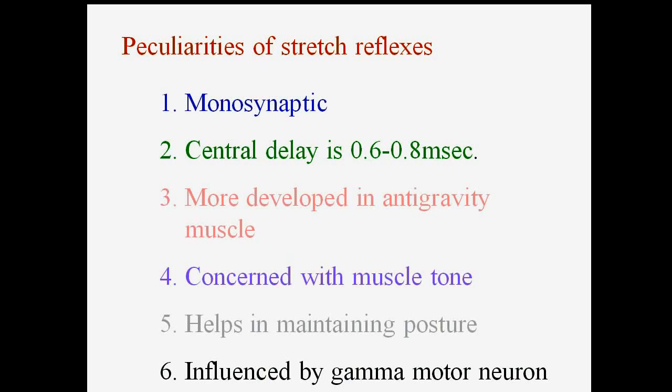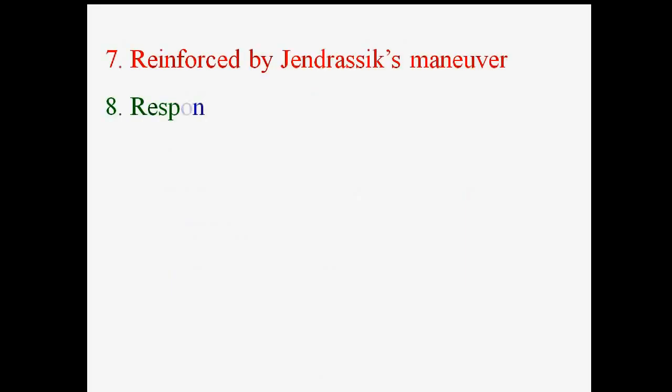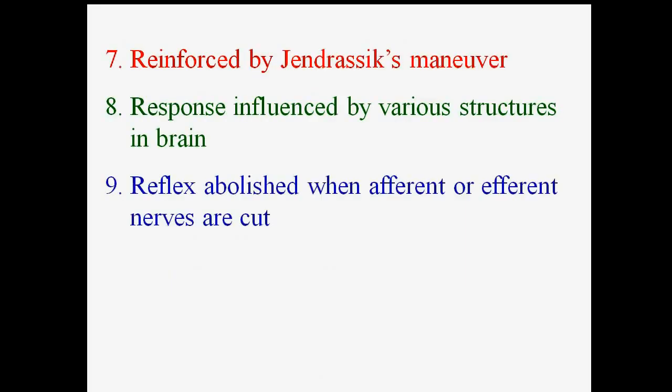To revise: the stretch reflex is monosynaptic, with a central delay of 0.6 to 0.8 milliseconds. It is more developed in anti-gravity muscles, concerned with muscle tone, and helps in maintaining posture. It is influenced by gamma motor neurons, reinforced by Jendrassik's maneuver, and influenced by various brain structures. The reflex is abolished when afferent or efferent nerve fibers are cut.